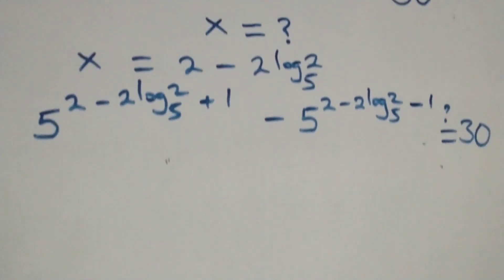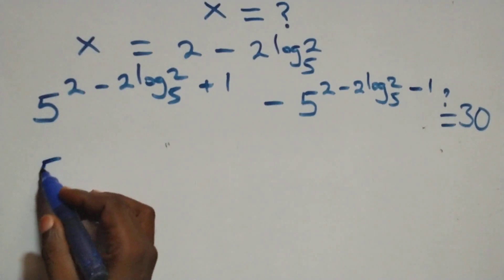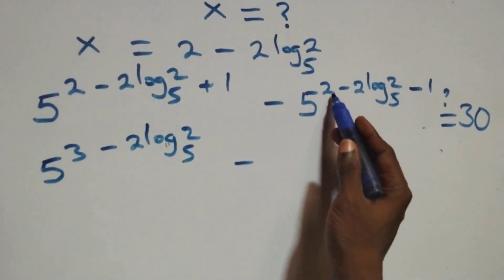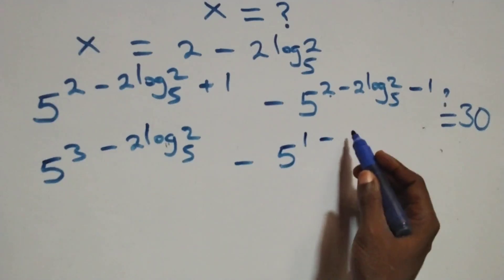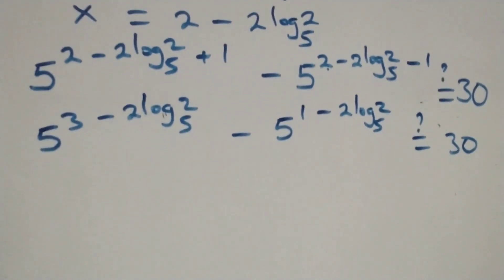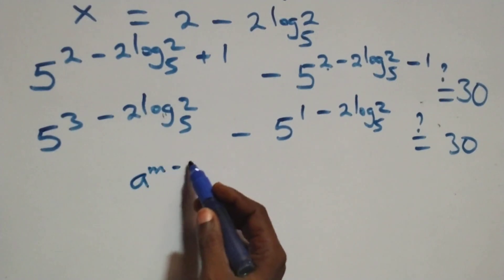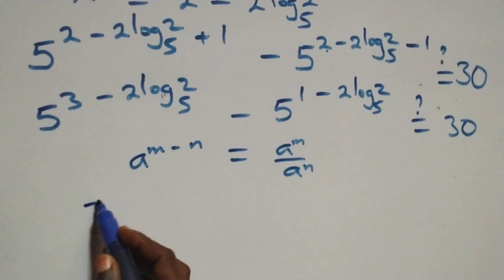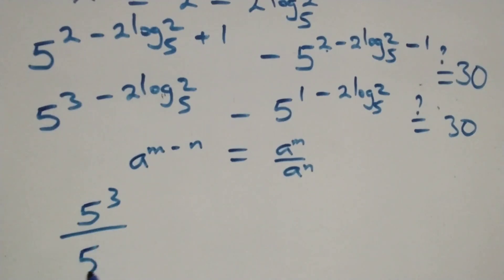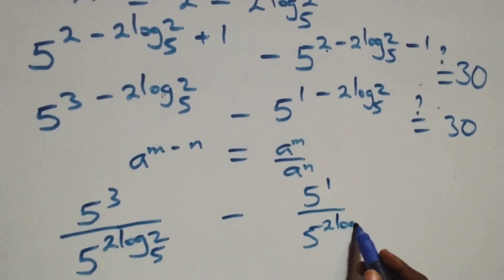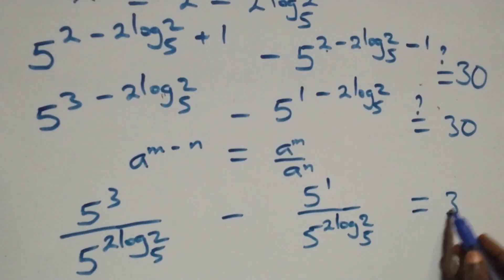We rewrite the exponents: 2 plus 1 equals 3, so we have 5 raised to power (3 minus 2 log₅2), then minus; and 2 minus 1 equals 1, so 5 raised to power (1 minus 2 log₅2), equals 30. Applying the law of indices — a raised to power n minus n equals a^n over a^n — we get 5³ over 5^(2 log₅2) minus 5¹ over 5^(2 log₅2), equals 30.